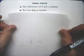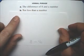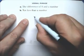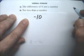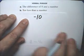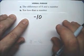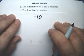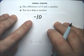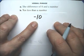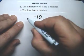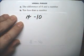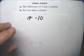10 less than a number. 10 less has to be minus 10. If you're 15 and your sister is 10 less than you, well, she's 5. And 10 less has to be minus 10. So 10 less than a number is X minus 10.